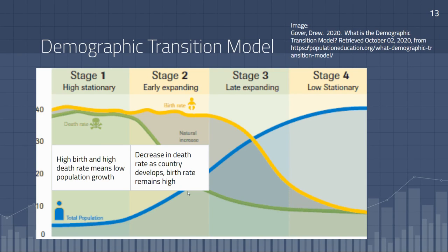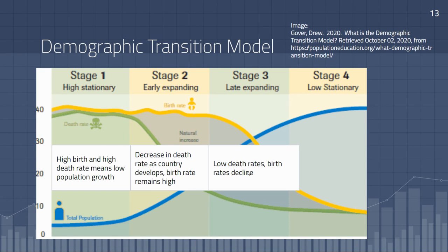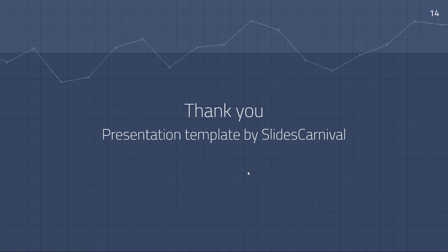In stage three, death rates are low and birth rates begin to decline, reflecting further development with better access to healthcare. Finally, in stage four, both birth and death rates are low and the population begins to stabilize.